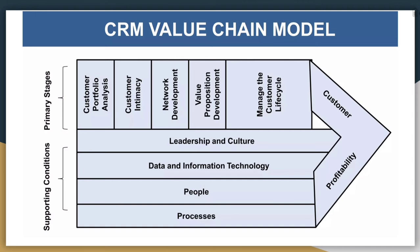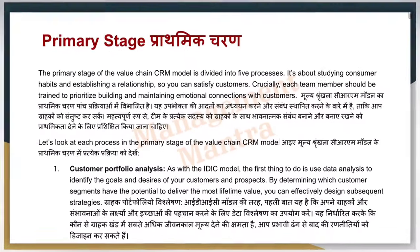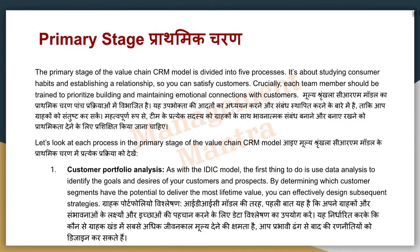The value chain model provides value through primary and secondary stages. First we look at the primary stages, which are divided into five categories.